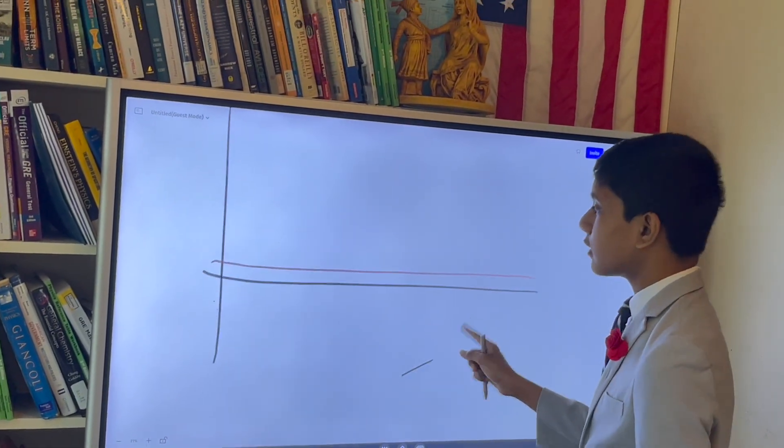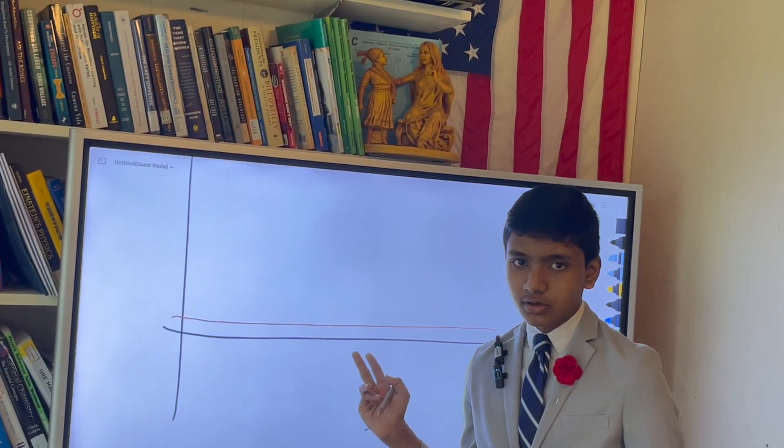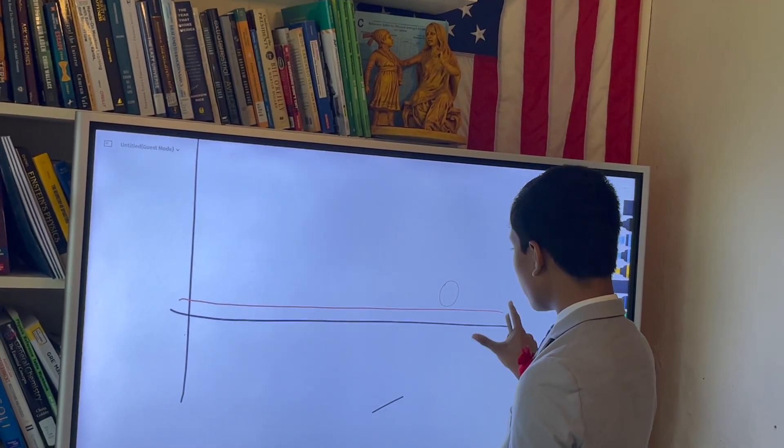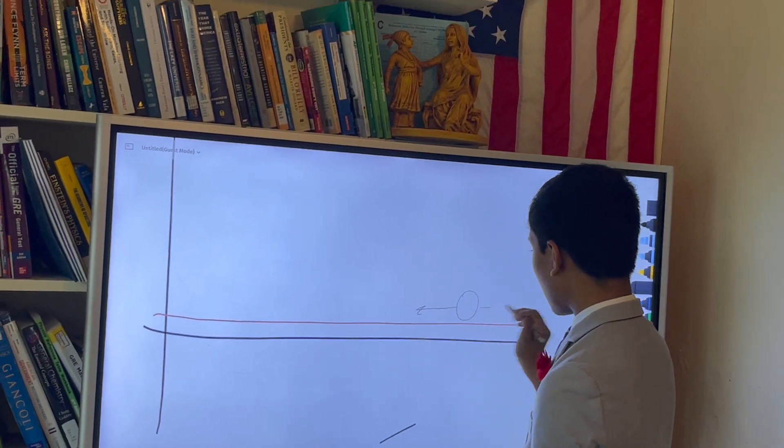So, what should happen when we have zero potential? Well, the particle is free to do whatever it wants. There's no hill pushing it this way or that way.